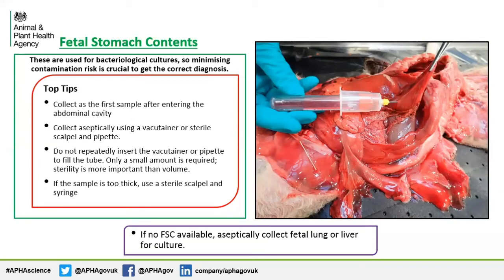Fetal stomach contents. When you enter the abdominal cavity of the fetus, this should be the first sample that you take, as it is absolutely vital that this sample is taken as aseptically as possible. It is used for bacteriology, so any contaminants will influence your culture results. The easiest way to ensure sterility is to use a vacutainer and needle; however, if the content is too viscous, you can incise the stomach wall with a sterile scalpel and then pipette or syringe the content into a sterile container. It is important not to repeatedly pipette from a sterility point of view. Only a little content is required. Some fetuses will not have any fetal stomach contents, so in this scenario a charcoal swab can be taken from the liver or lung for bacteriology.